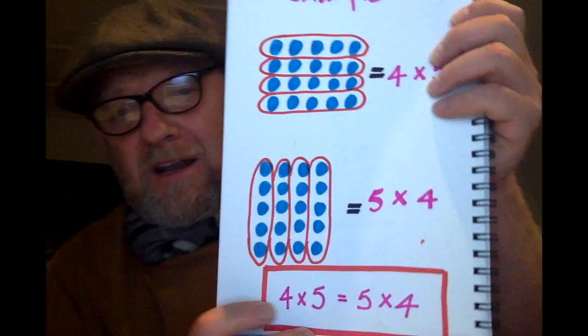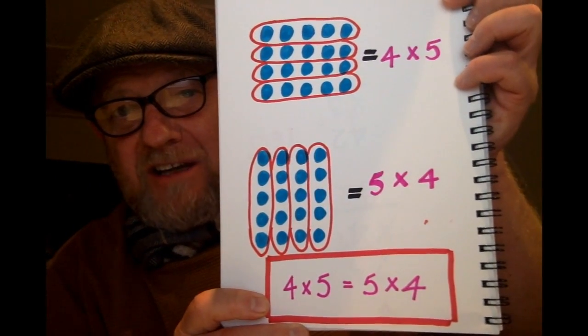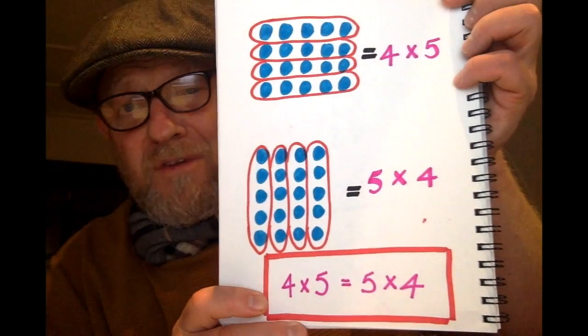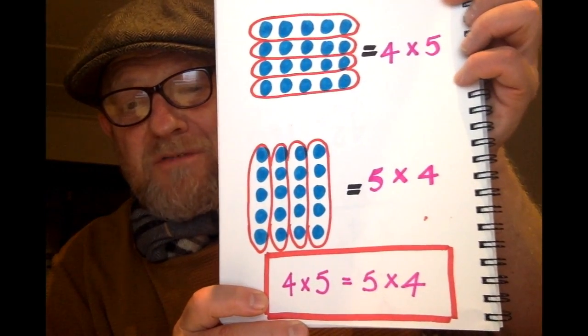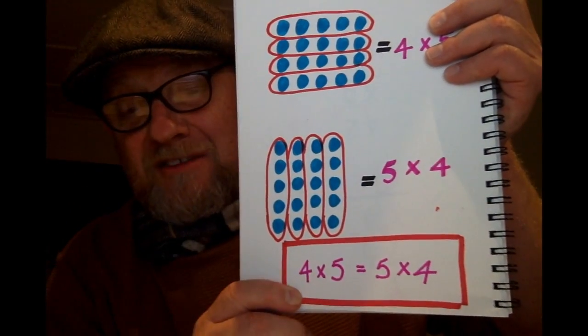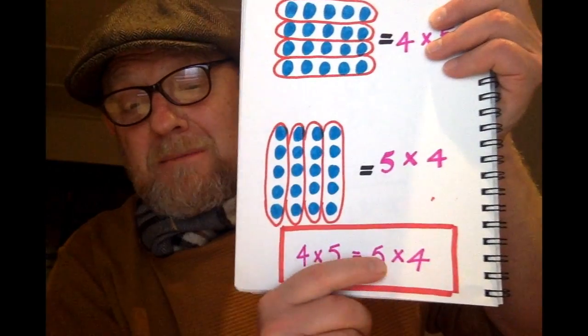It has to be set out like this, so you recognise that 4 groups of 5 is the same as 5 groups of 4. Do them as the dots, lay them out as your counters, and then do them as the sums down the bottom.